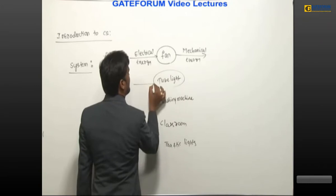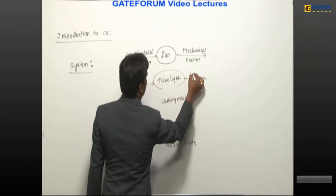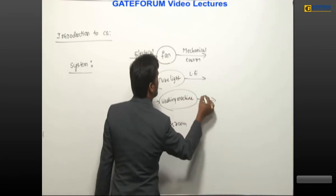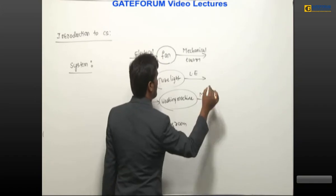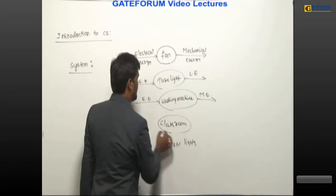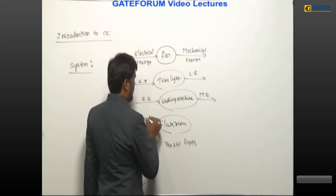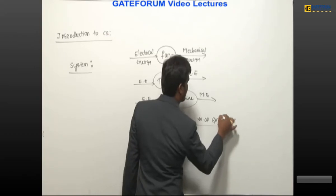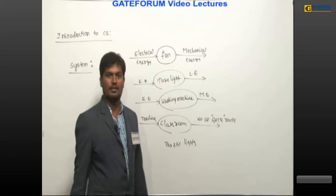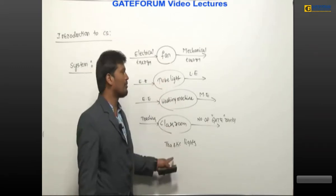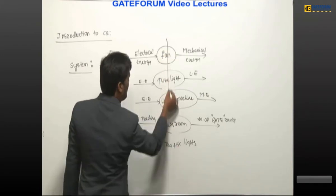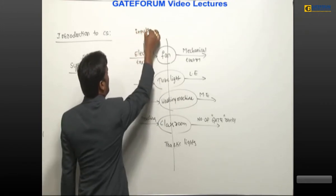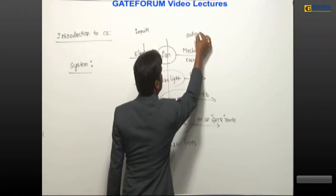A tube light is a system — input is electrical energy, output is light energy. A washing machine is also a system — input is electrical energy, output is mechanical work done. A classroom is also a system — input is teaching, output is the number of GATE ranks from the student side. In all these examples, before the system there is an input and after the system there is an output.